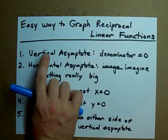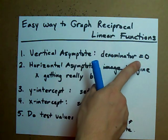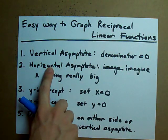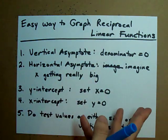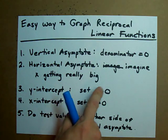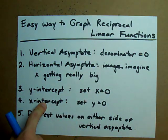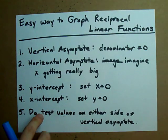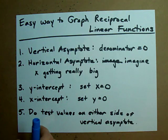You're going to find a vertical asymptote by setting your denominator equal to zero. You're going to find a horizontal asymptote by imagining that x gets really really big. You're going to find a y-intercept by setting x equal to zero. You're going to find an x-intercept by setting y equal to zero, and you're going to do test values on either side of the vertical asymptote.